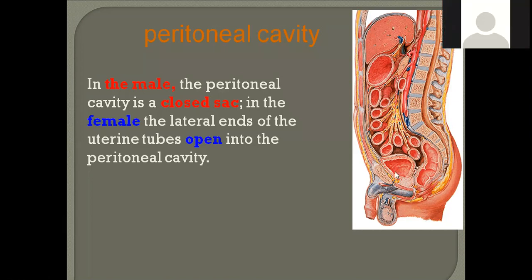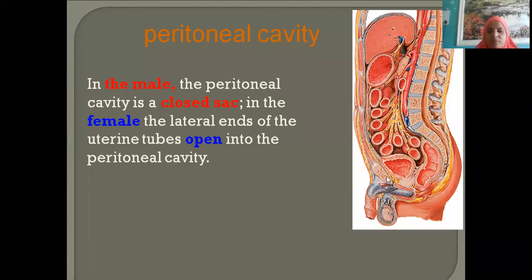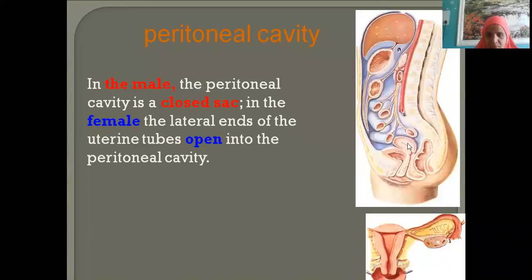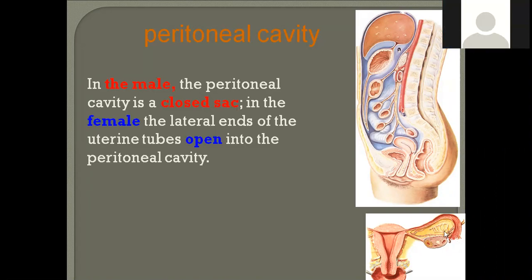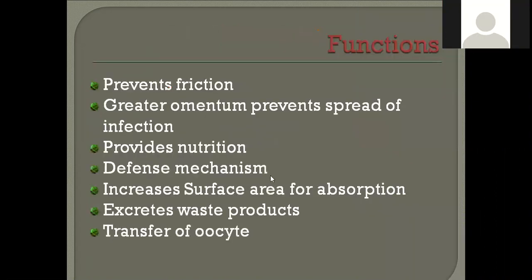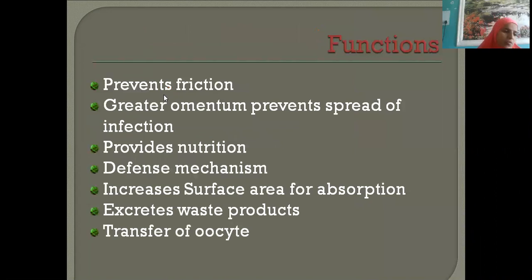The section without a uterus in the middle is the male sagittal section. In the female, you can see urinary bladder, uterus, and rectum/anal canal. In the female, the peritoneum is open — it opens at the fimbriae of the fallopian tube.